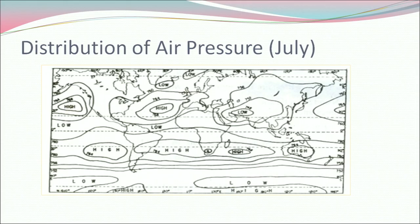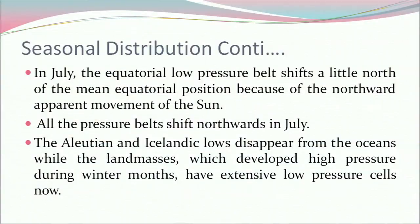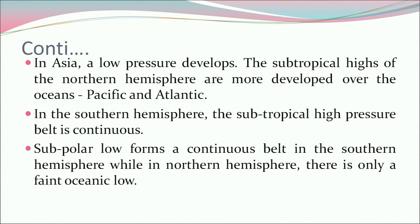Now let's look at the distribution of air pressure in July. The equatorial low pressure belt shifts slightly north of the mean equatorial position because of the northward apparent movement of the sun, and all pressure belts shift northward in July. The Aleutian and Icelandic lows disappear from the oceans while the land masses that developed high pressure during winter now have extensive low pressure cells. In Asia a low pressure develops. The subtropical highs of the northern hemisphere are more developed over the Pacific and Atlantic oceans. In the southern hemisphere the subtropical high pressure belt is continuous, and the subpolar low forms a continuous belt, while in the northern hemisphere there is only a faint oceanic low.